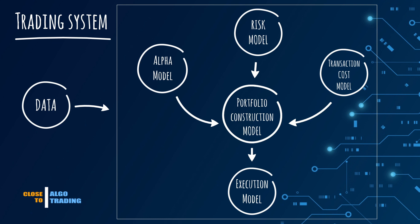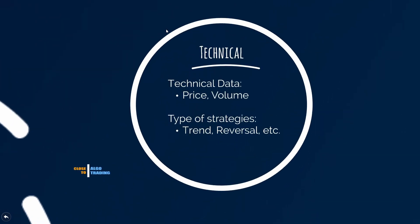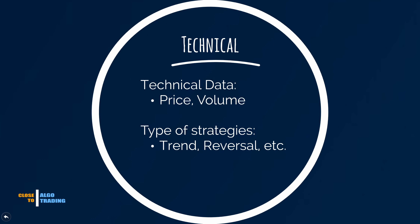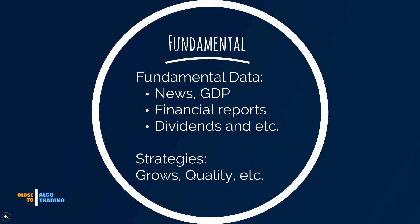The first element in the presented structure is alpha model. It is a trading idea, strategy that is designed to predict the future. Normally, the output from this model is a return or direction for an asset. There exist two well-known types of trading models: technical models that use price data and are based on technical analysis, and fundamental models that use financial data and are based on fundamental analysis.